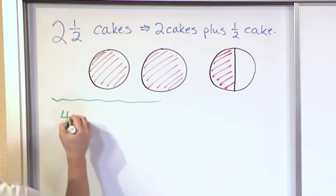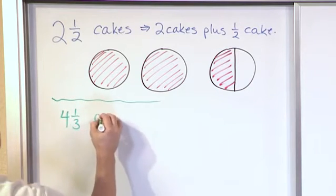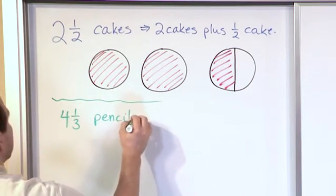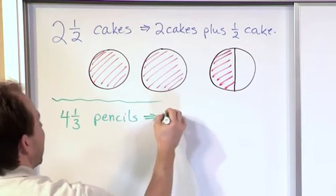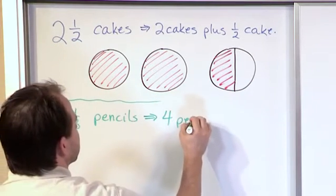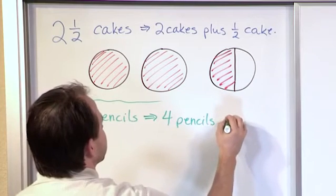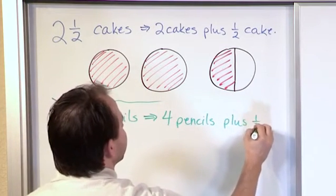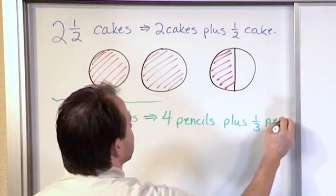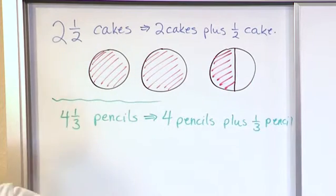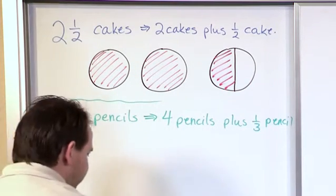If I have four and a third pencils, what does that really mean? If I have four and a third pencils, it means I have four pencils plus one third of a pencil. Right? So four and a third, exactly the way it sounds.